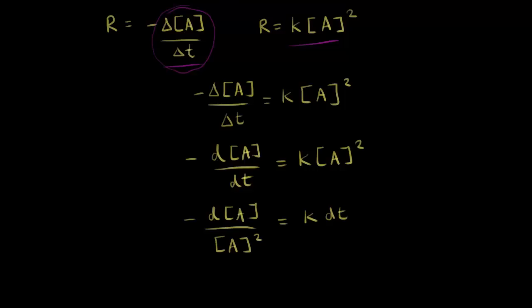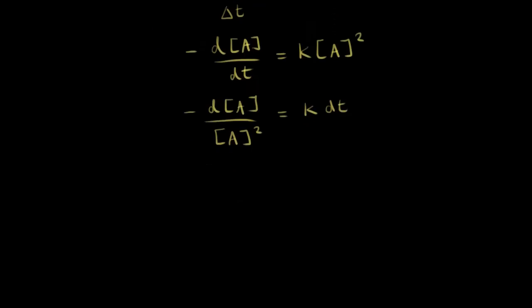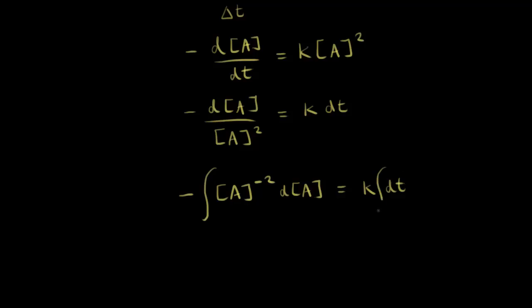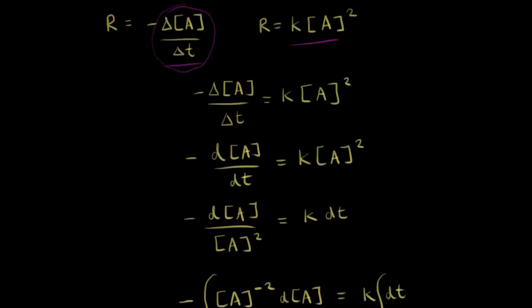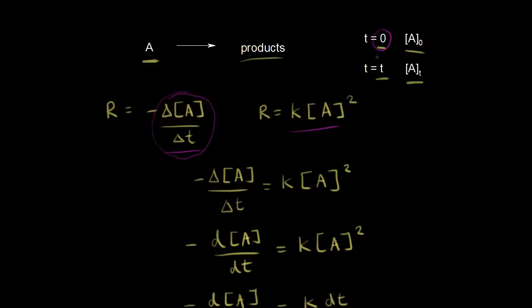Next we're ready to integrate. Let's rewrite what we have on the left: the negative concentration of A to the negative two power, dA, just to make the integral a little easier to follow. On the right we still have K dT. We're going to integrate both sides. K is a constant so we can pull it out of the integral. For time, we're going from zero to T. For our concentration, we'd be going from our initial concentration to our concentration at time T.